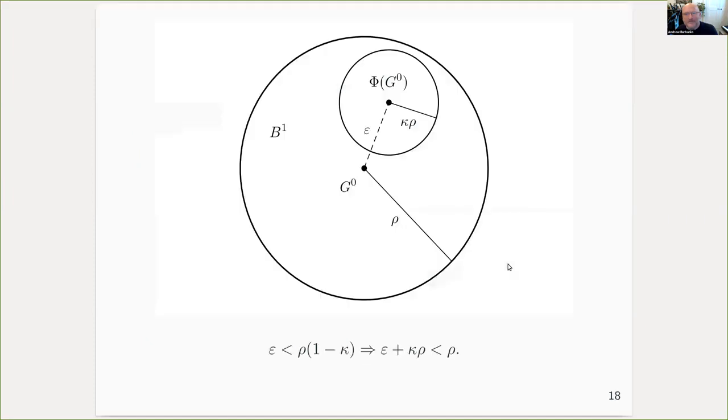Again, it's easier to see this with a picture. I've got my approximate fixed point G zero. I form this ball around it of radius rho. I bound how far the center of the ball moves and I come up with a bound on the image inside a ball of radius kappa times my original radius. And then if the inequality at the bottom of the screen is satisfied, then indeed the smaller ball really does lie within the larger one, and we can apply the contraction mapping theorem.